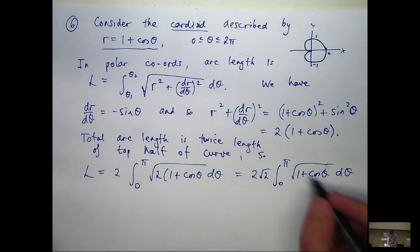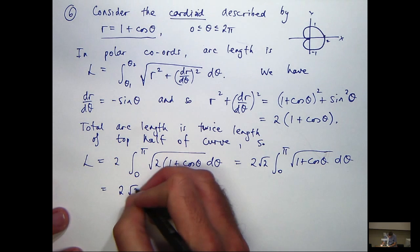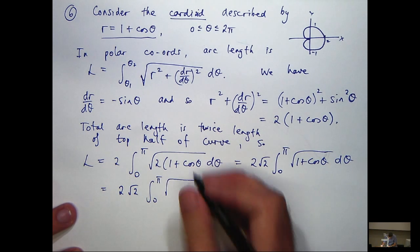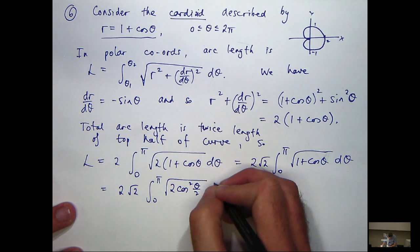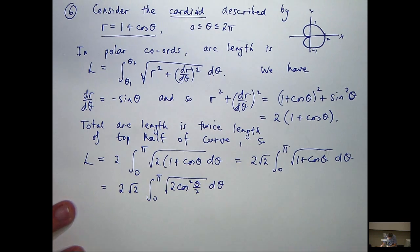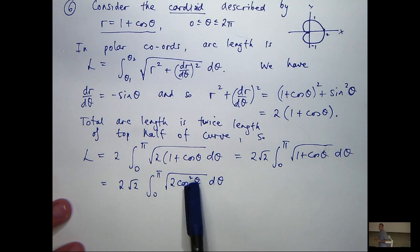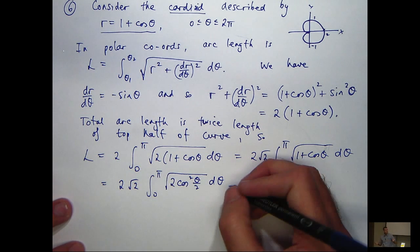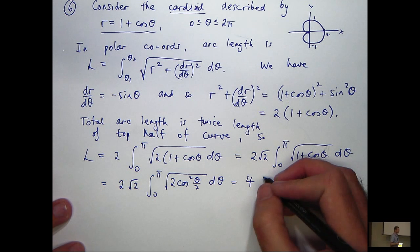And then I can change this to something involving cos squared θ/2 using the double angle formula. Now I can take the square root of 2 out again, and I don't need to worry about whether cosine is positive or negative here because it's always going to be positive. Take that square root out, I'll get four times this.